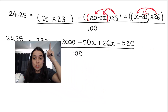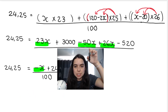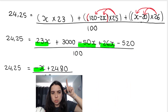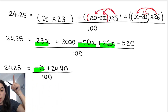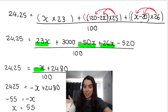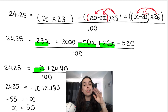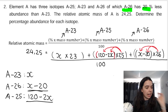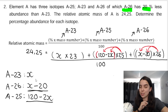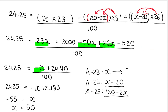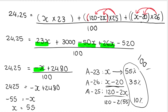After distributing and collecting like terms I got −x and 3000 − 520. Then I divide by 100 — taking it over means multiplying by 100 — and I get x = 55. Finishing off: A23 = 55%, A26 = 55 − 20 = 35%, and A25 = 120 − 2(55) = 10%. Adding these three percentages gives 100%, confirming the answer is correct.